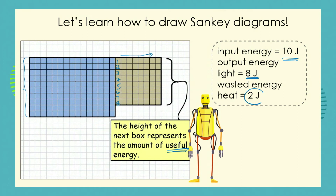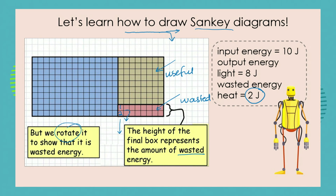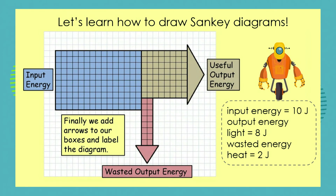We've still got to account for the wasted energy. Two joules — two blocks — represents the wasted energy. Because we want to show inputs going through to useful outputs and wasted energy outputs, we're going to rotate this last block and face it downwards to show that it is wasted energy. Notice that we've colored the output energy in two different colors: one for the useful and one for the wasted. We can also label: 10 joules of input, 8 joules of useful, and 2 joules of wasted energy.